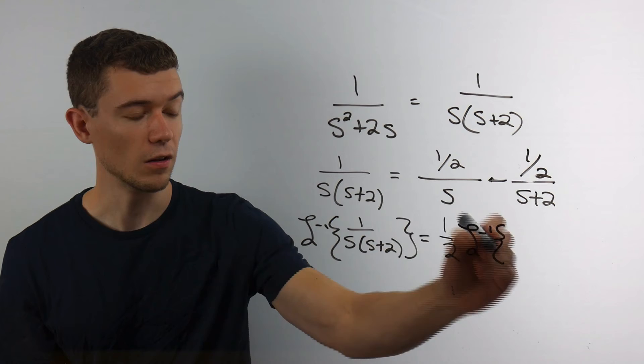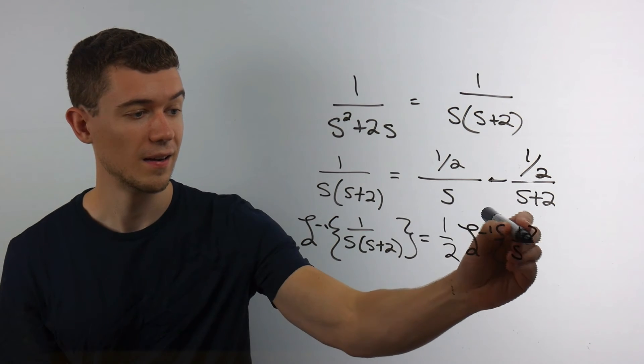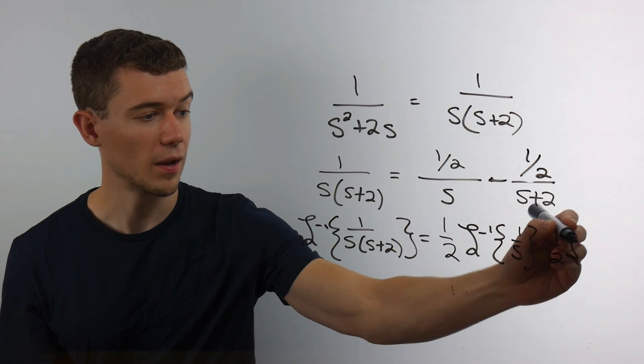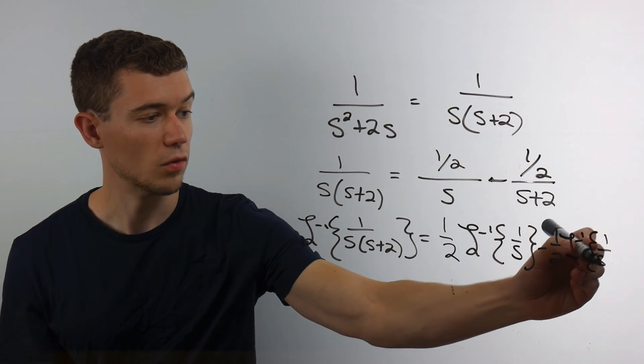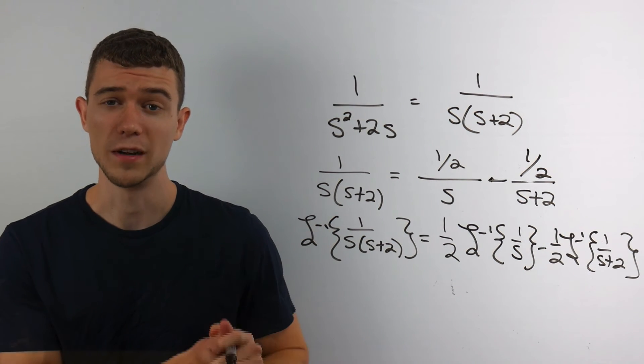So this is really taking the Laplace inverse of just 1 over s, and then minus 1 half the Laplace inverse of 1 over s plus 2. And that's just using the properties of Laplace transforms.